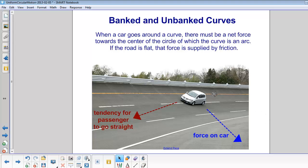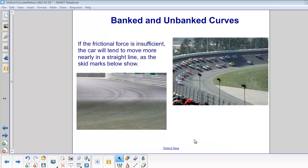Newton's first law says a passenger in the car, or even the car itself, has a tendency to go straight, so there must be a force on the car towards the center of a circle so that the car can turn. If there is not enough friction, the car will slip. It will tend to move more in a straight line.